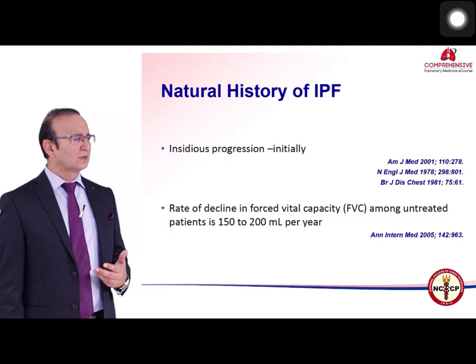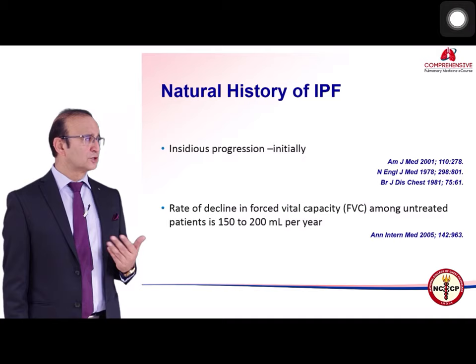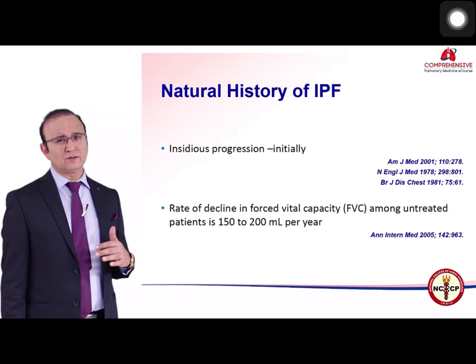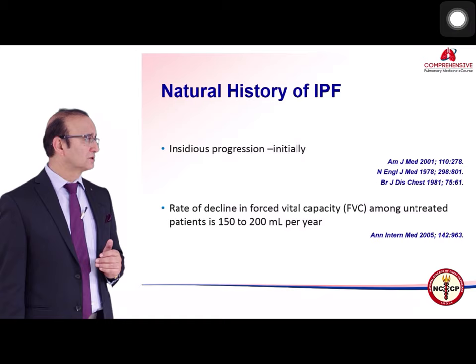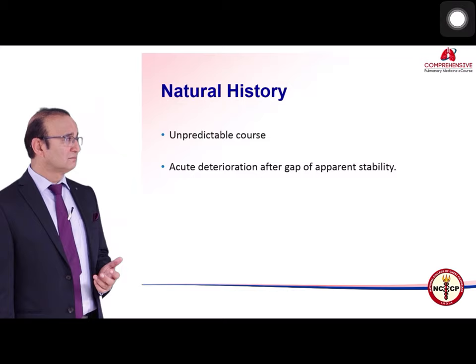Historically, when IPF progresses, disease progression is insidious at least initially. Data from the placebo arm of clinical trials suggest the fall in FVC is about 150 to 200 ml per year. The course may be unpredictable, as some patients develop an acute deterioration after a period of apparent stability.